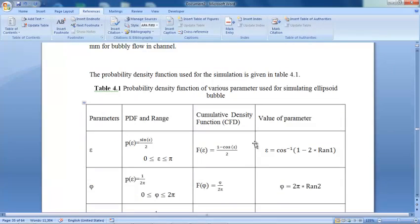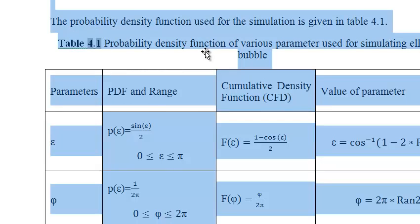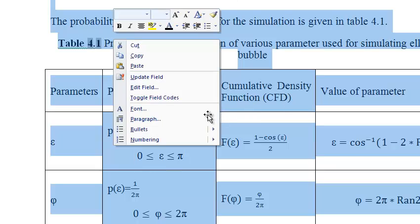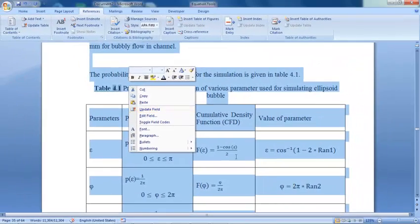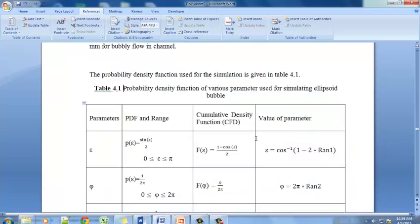For updating all these things again, you can select and right-click and use update, or you can update all the figure numbers, table numbers in the complete document. Select Control+A to select all the complete document, then right-click and use update field. This can be done quite easily. Thank you for watching this video.